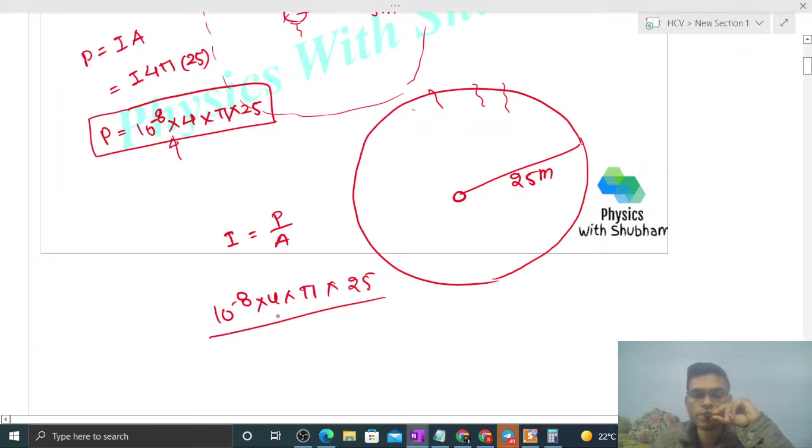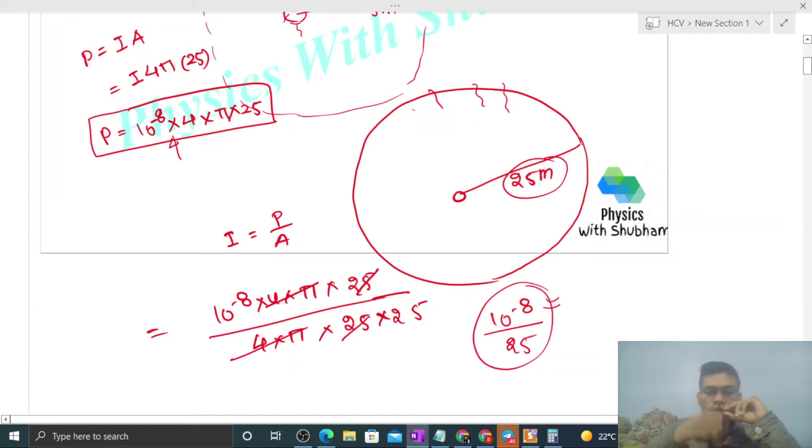Area of this sphere will be 4 into pi into r square. R will be 25, so 25 squared, so 25 into 25. So you can calculate this value easily. 4 pi will cancel, 25 will cancel, and it will be 10 raised to the power minus 8 divided by 25.